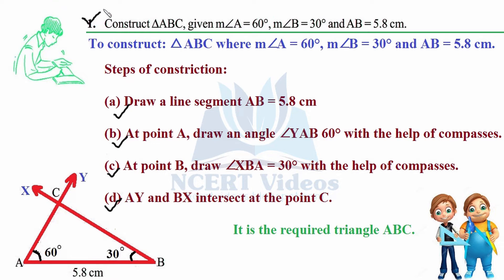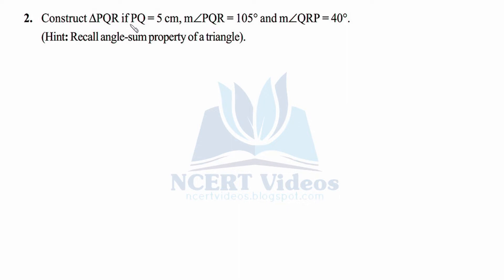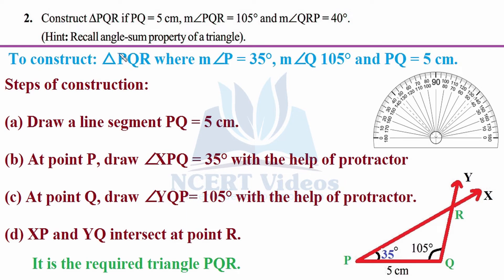This completes the construction of the triangle — that is your answer to Question 1. Question 2: Construct triangle PQR if PQ measures 5 centimeters, angle Q measures 105 degrees, and angle R measures 40 degrees. Hint: recall the angle sum property of a triangle. The aim is to construct triangle PQR; angle P is not given but we can find it since angles Q and R are given along with line segment PQ.